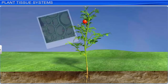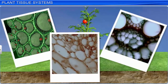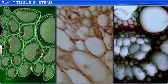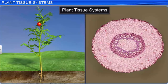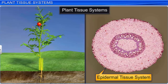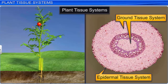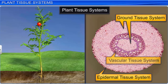The body of a plant consists of various types of cells which form different types of tissues. The structure and function of these tissues depend entirely on where they are located inside a plant. Based on this, plant tissue systems can be classified into three types: epidermal tissue system, ground or fundamental tissue system, and vascular or conducting tissue system.